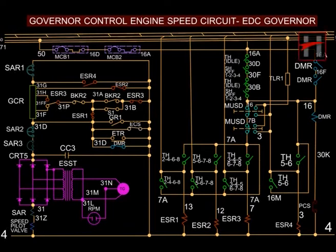This is the governor control engine speed circuit, or the throttle DMR circuit, for diesel engine locomotives fitted with EDC governor. This circuit is used to control the speed of the diesel locomotive.